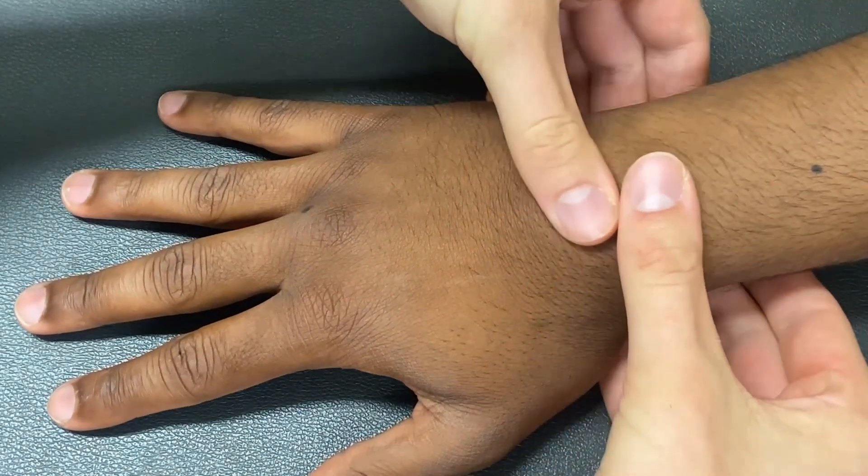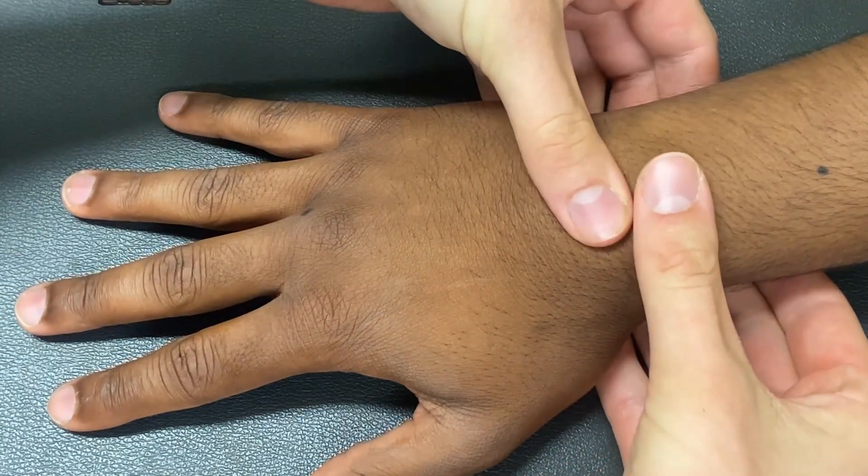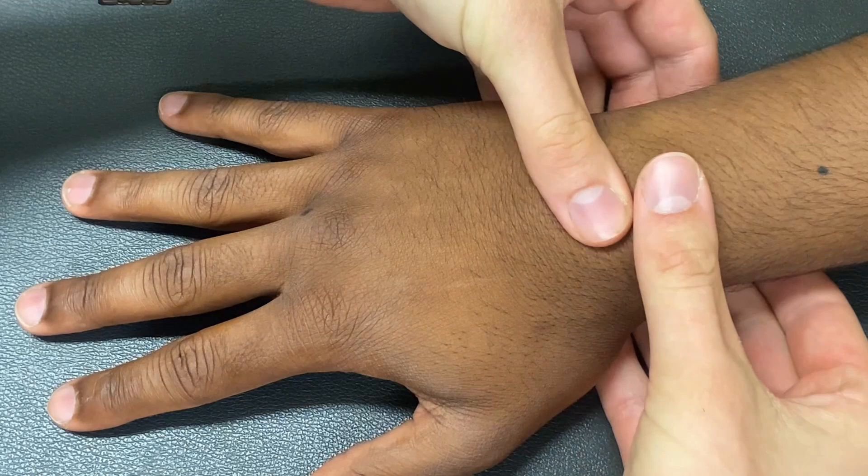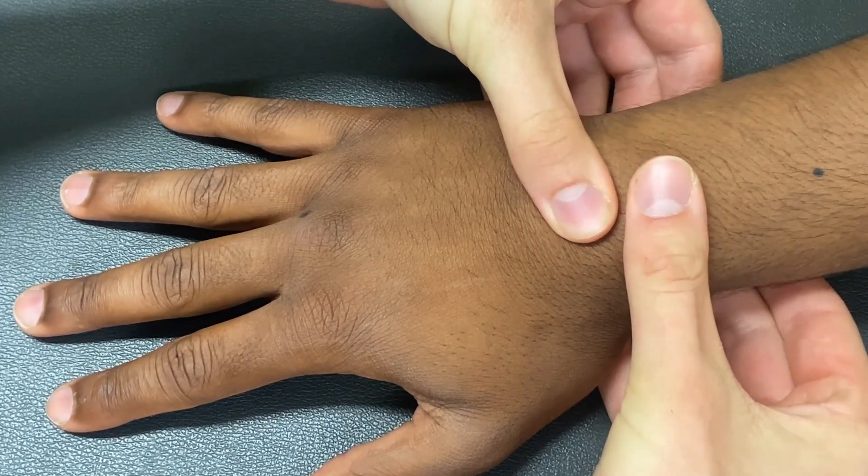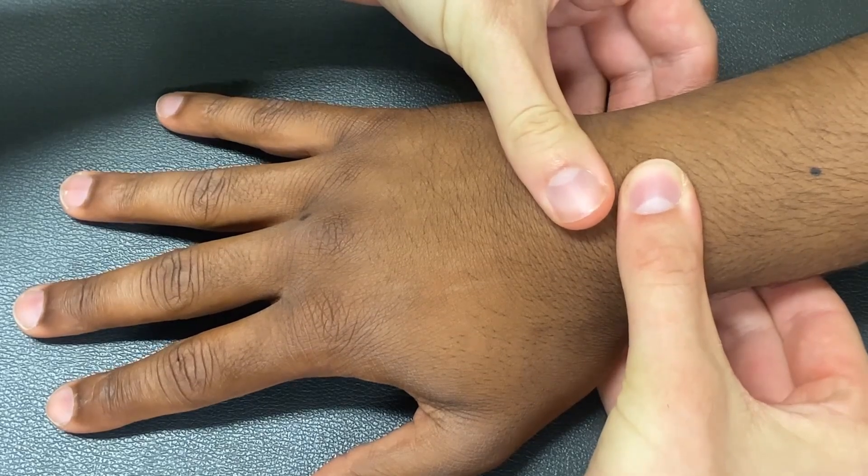Starting at the wrist, palpate with your thumbs the joint line between the radius and the carpal bones. With your thumbs placed beside each other either horizontally or vertically, press one thumb down and feel for the reciprocal bulge of fluid within the joint capsule with the other thumb.